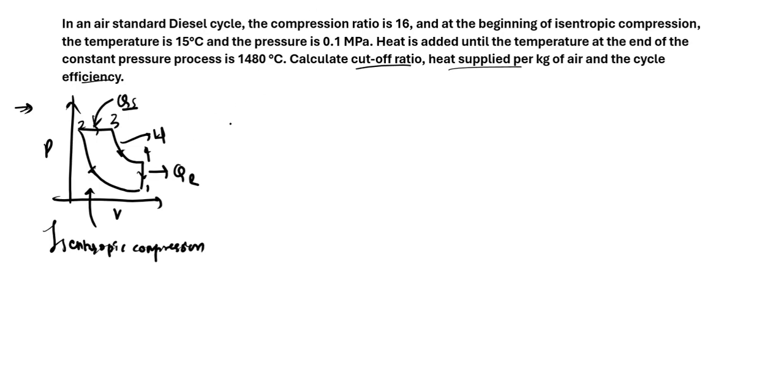If we have the temperature at 1, which is 15 degree Celsius, you need to convert that into Kelvin, which will be 15 plus 273, which comes out to be 288 Kelvin. We have pressure at 1 as 0.1 megapascal. We have the compression ratio as 16. And we have gamma as 1.4 because for air, gamma is 1.4.